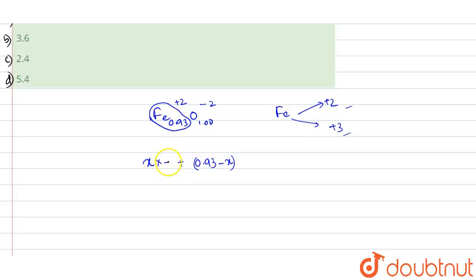So let's multiply them: x into plus 2, plus 0.93 minus x into plus 3 oxidation states together conclude to a net charge of plus 2.